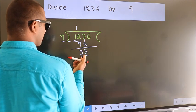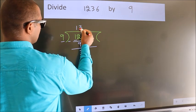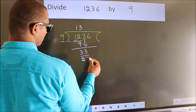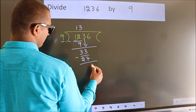A number close to 33 in the 9 table is 9 times 3, which is 27. Now we subtract. We get 6.